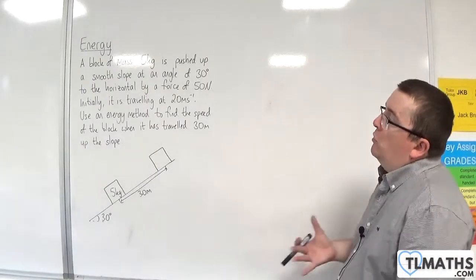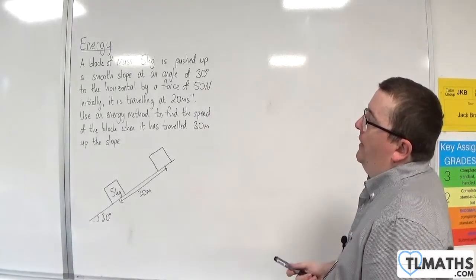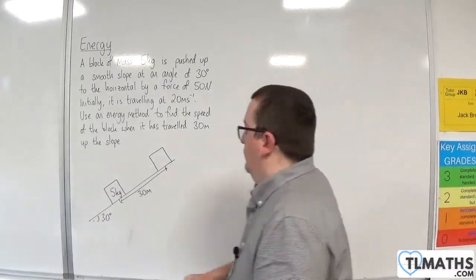In this problem, we have a block of mass 5 kilograms pushed up a smooth slope at an angle of 30 degrees to the horizontal by a force of 50 newtons.